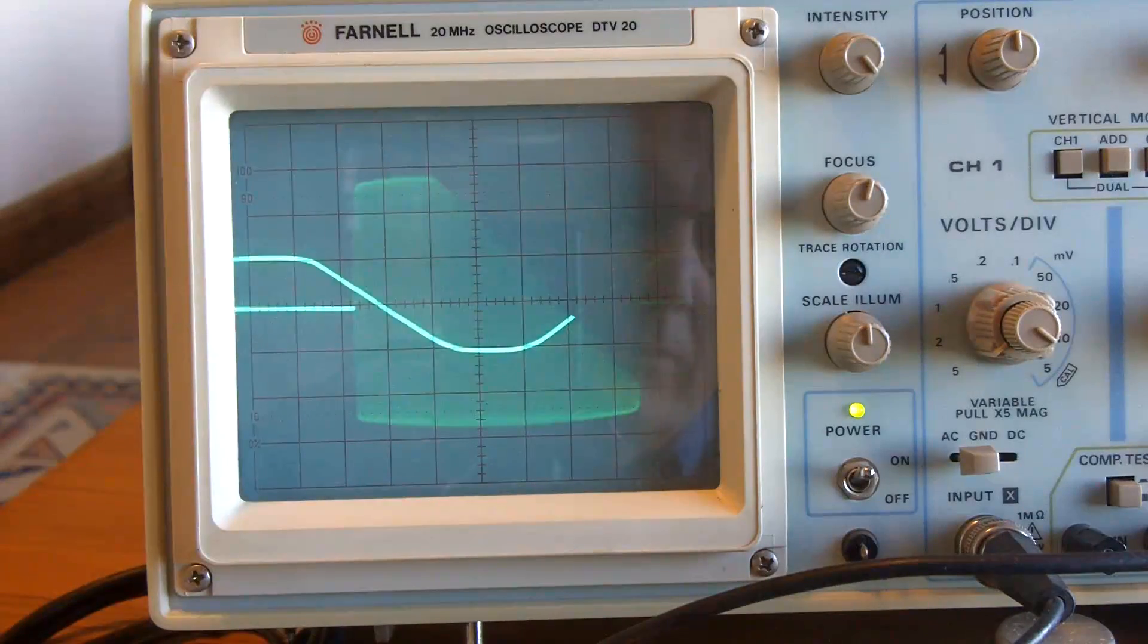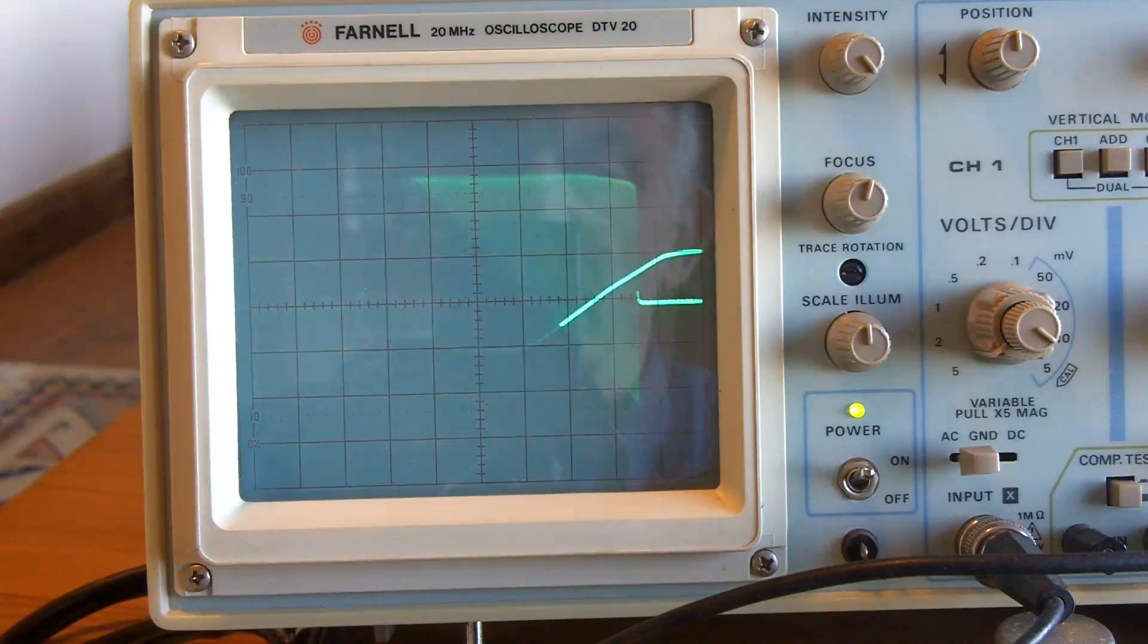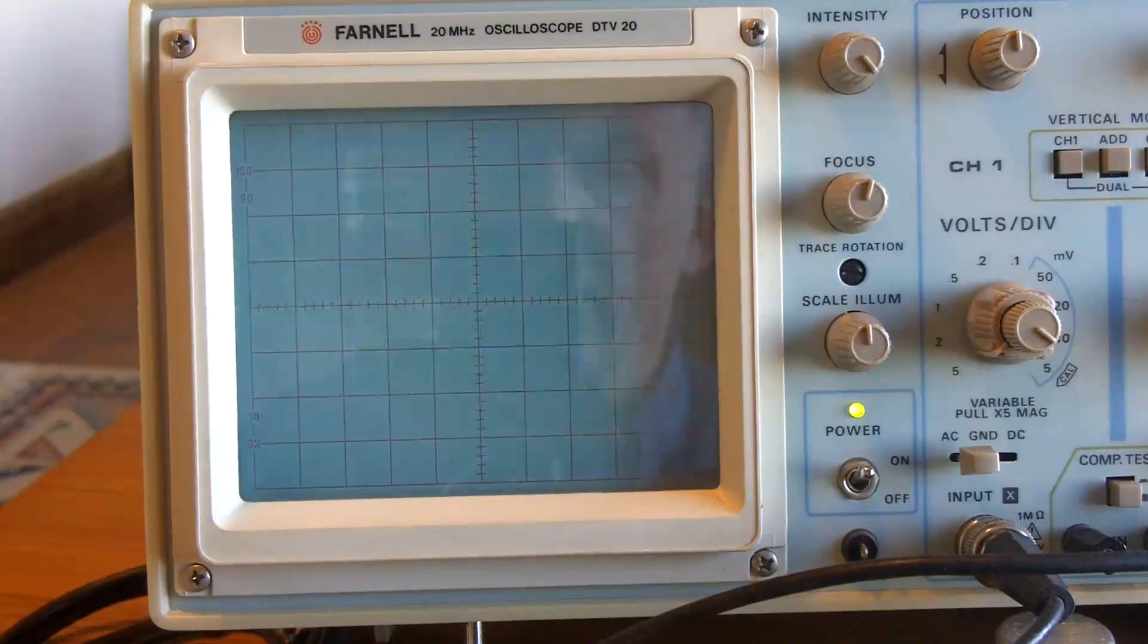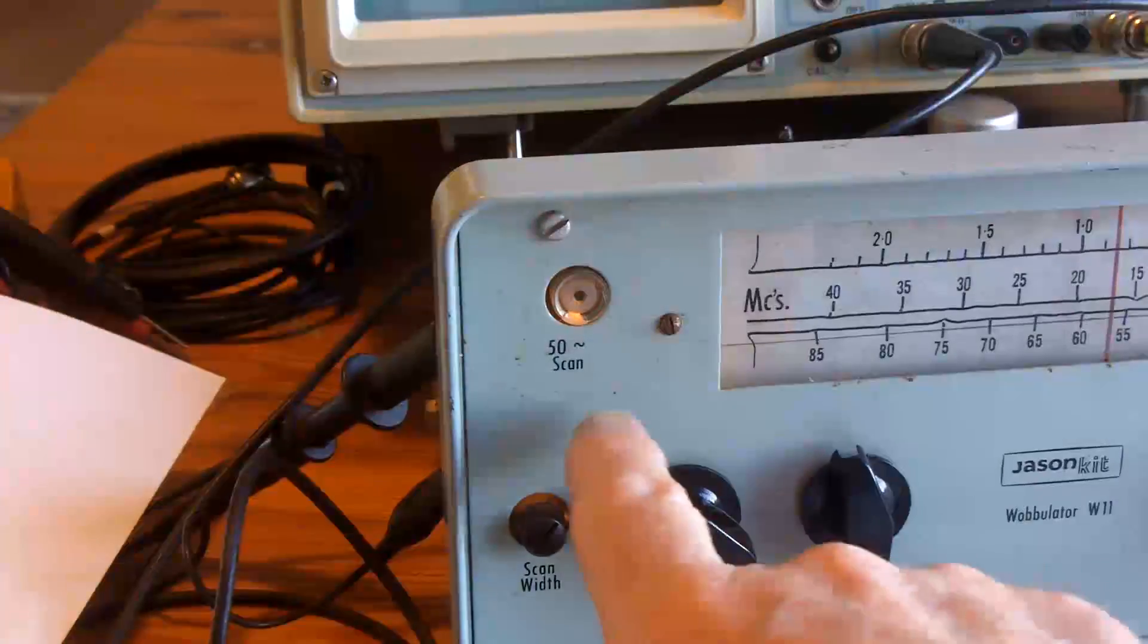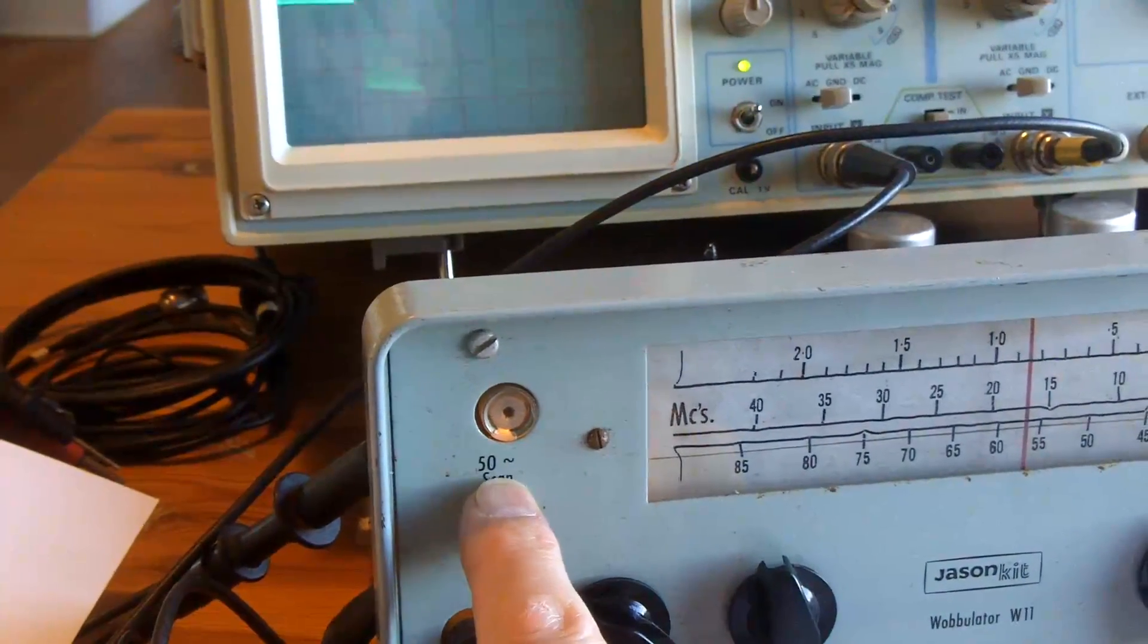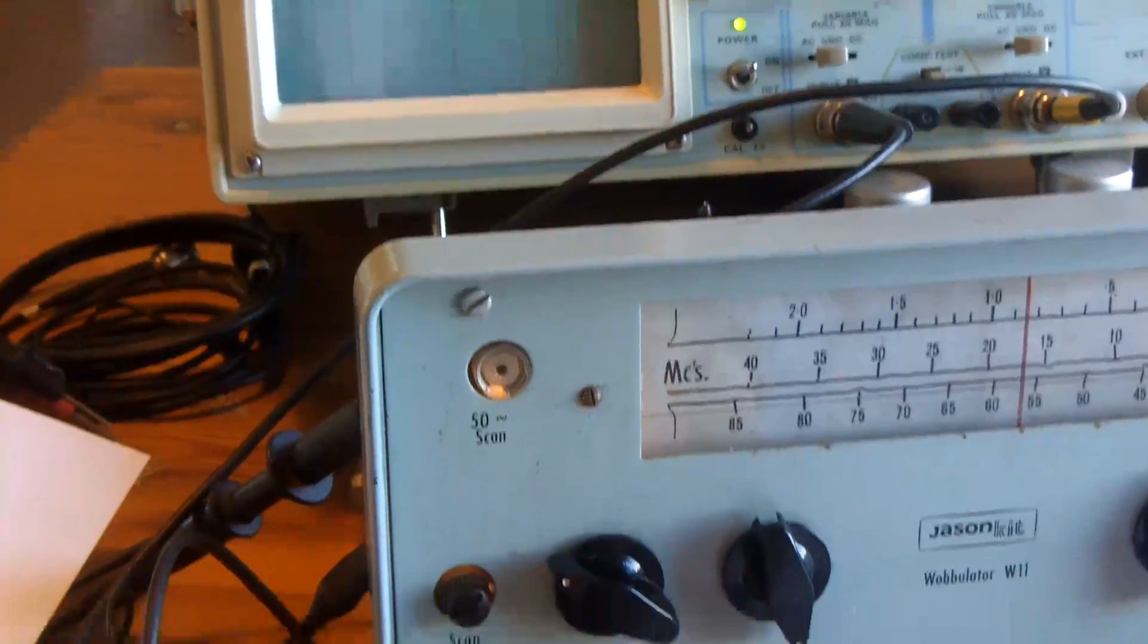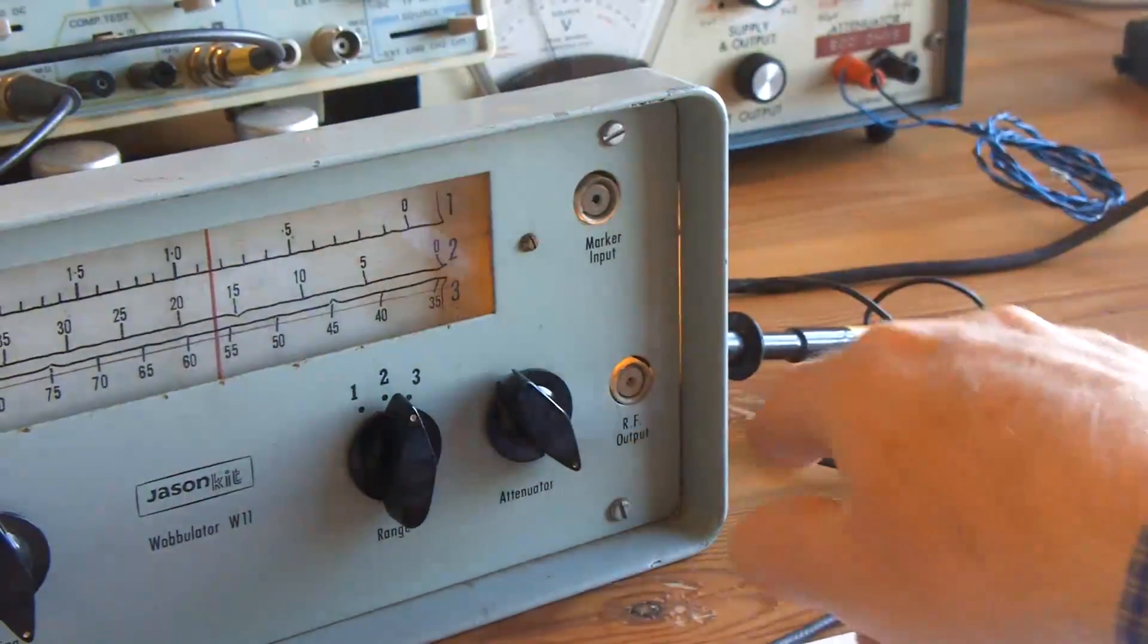Having removed those failed capacitors, I've hung the oscilloscope onto a couple of connections on the back of the Wobulator. And the one trace is here, just got the scope probe on the back there. That says 50 Hz scan, so that's the signal to trigger the oscilloscope. And then the other is the RF output. And again, I've got the other scope probe on there.